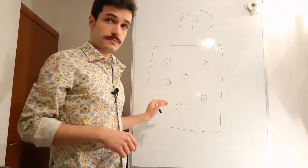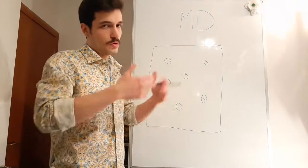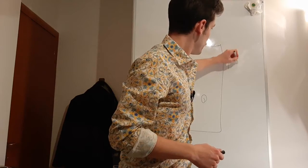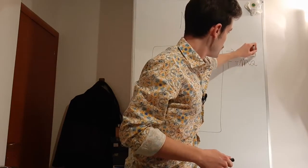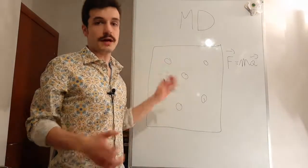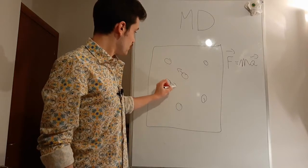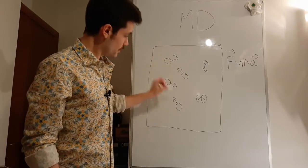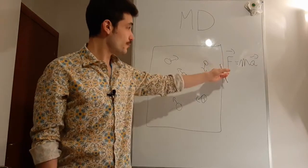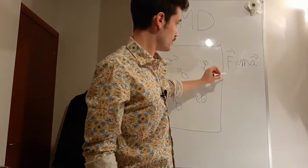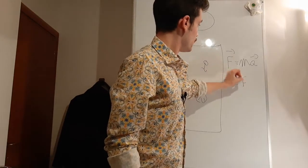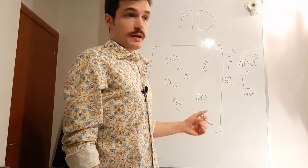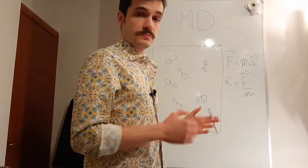We have a box with a certain number of atoms or molecules inside. And we simply apply Newton's law — F equals mass times acceleration — to each single particle. So we calculate the forces from the interactions with every other particle, and then apply F equals m times acceleration. What we get is the acceleration equal to force divided by mass, and once we have the acceleration, we can find the velocity and the position in the next step.